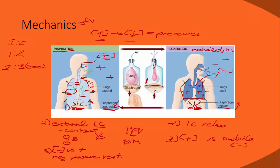To review the mechanics of ventilation: during inspiration, the diaphragm contracts and moves down, the external intercostal muscles contract moving out and up, creating a vacuum where the inside of the lungs is more negative versus the outside air which is more positive, and air rushes in.